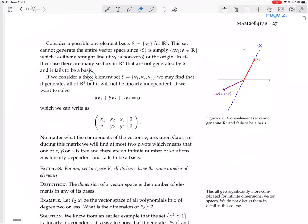So what if we consider a three-element set, V1, V2, V3? Well, it might generate all of R2, but it will not be linearly independent. If we want to solve alpha V1 plus beta V2 plus gamma V3 equals zero, we would be looking at solving...